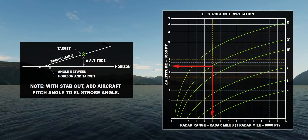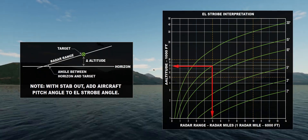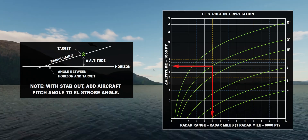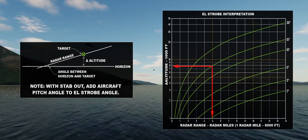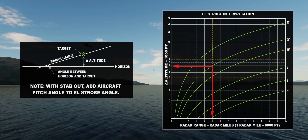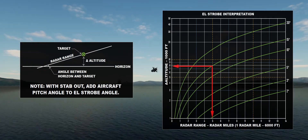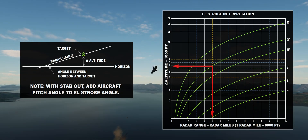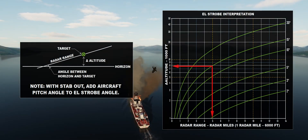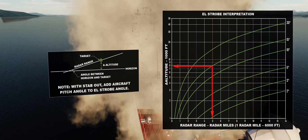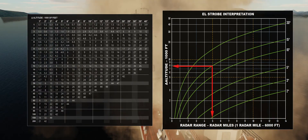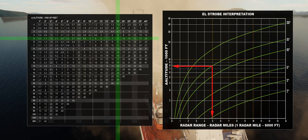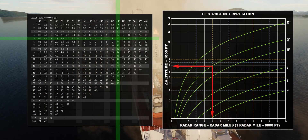The interpretation of the chart depends on the stabilization of the antenna. If activated, then the reference is the horizon. Therefore, all the WIZO has to do is intersect the radar range in miles with the curve depicting the antenna elevation angle. In this example, a target at 5 miles and 15 degrees has a delta altitude of circa 8,000 feet. However, if the stabilization is out, then the reference is not the horizon anymore, and the WIZO has to add the aircraft pitch angle to the antenna elevation angle before intersecting the radar range.